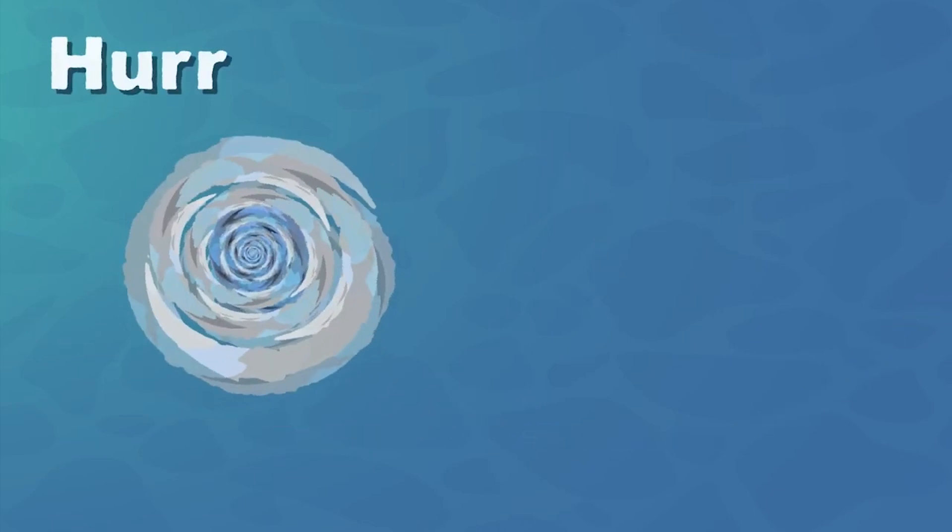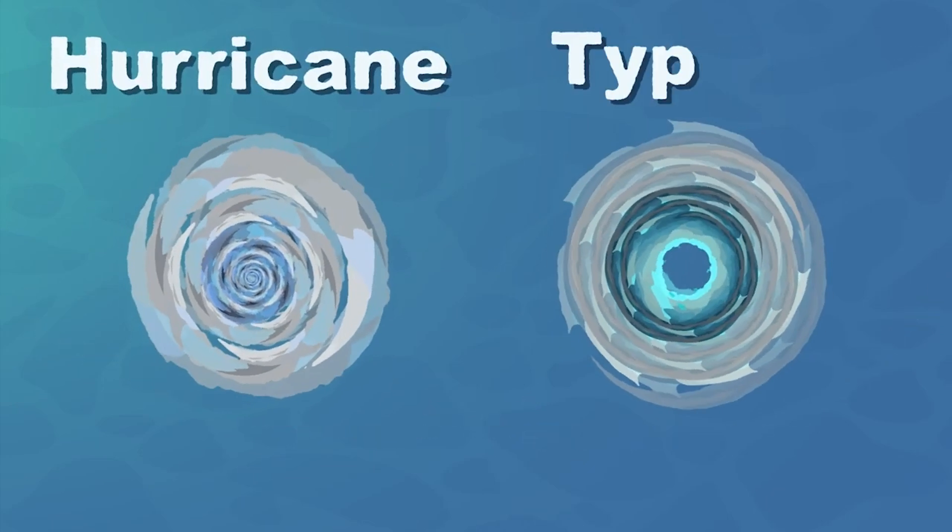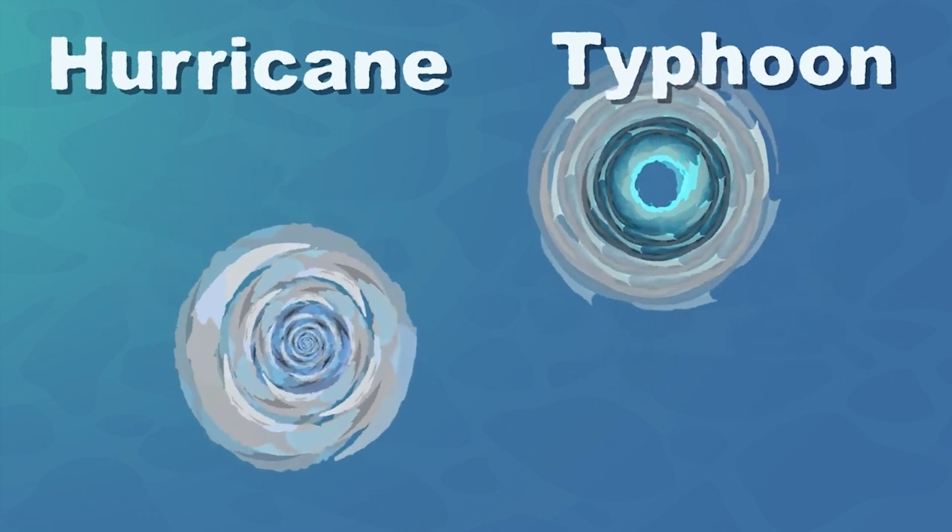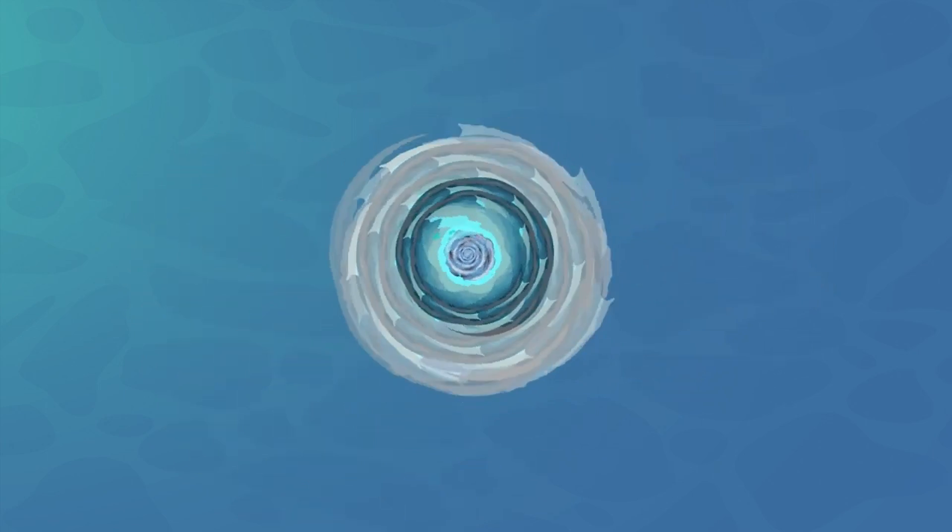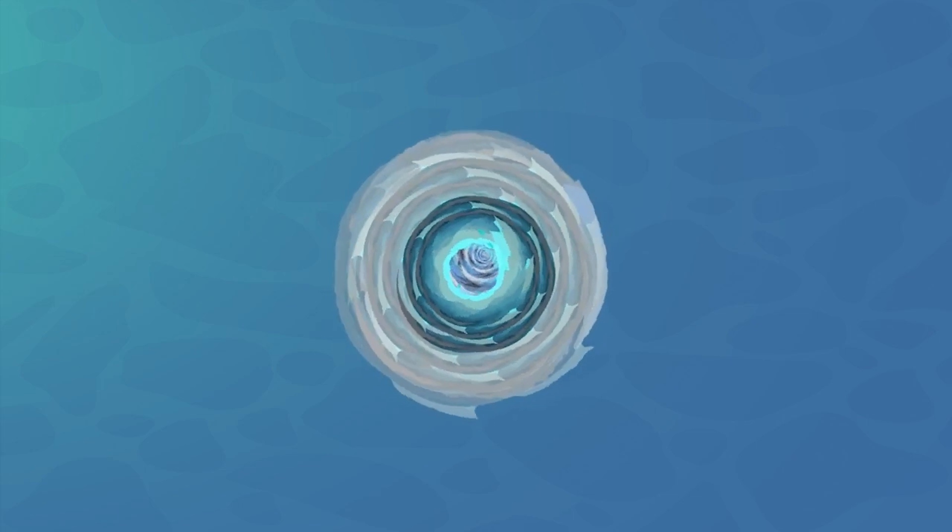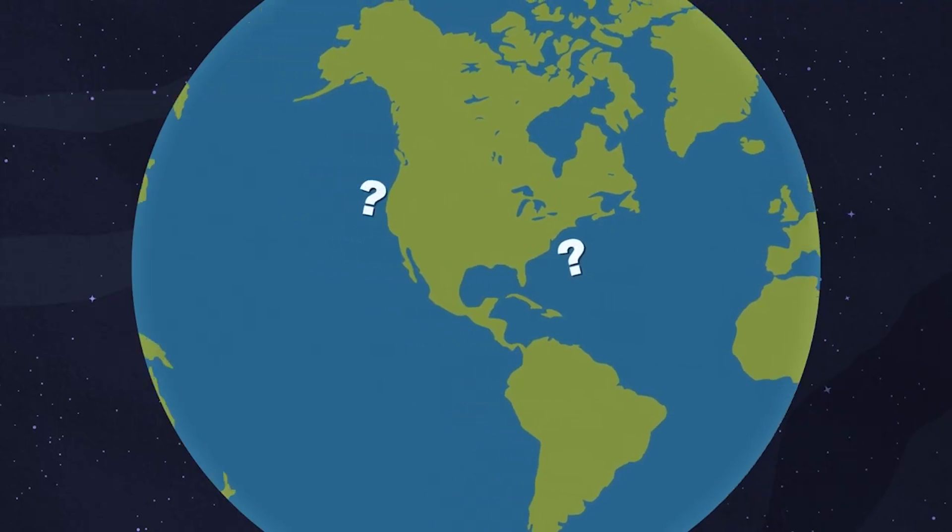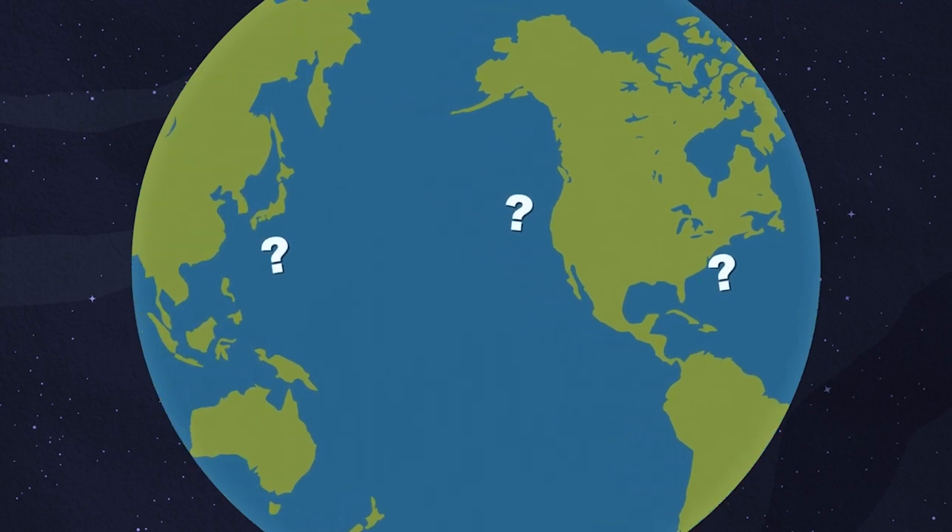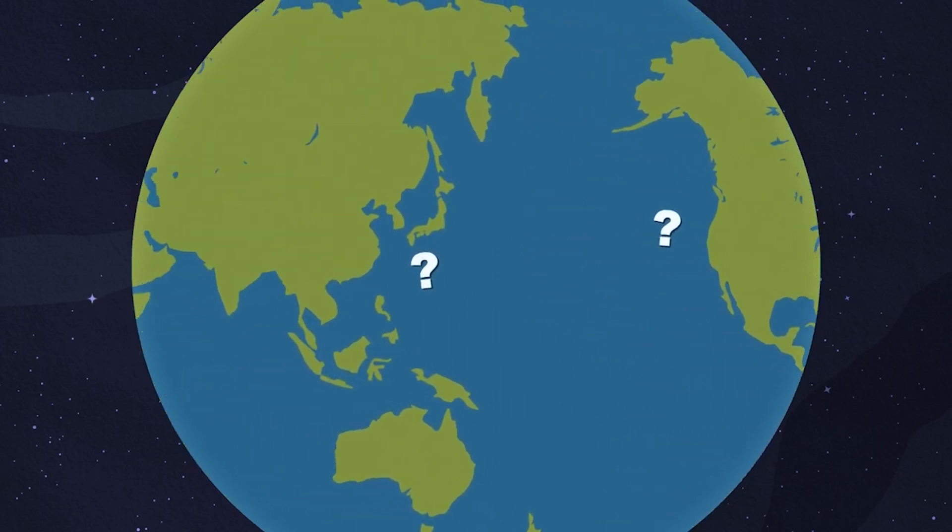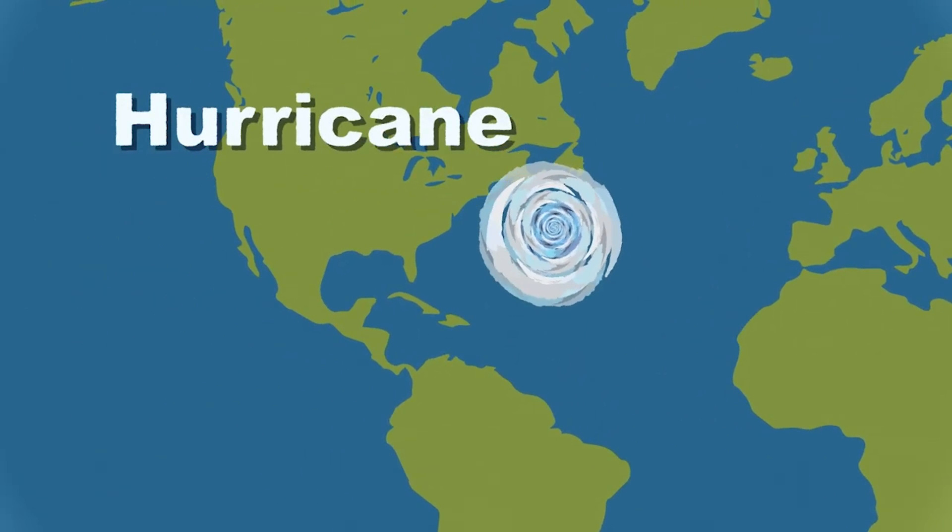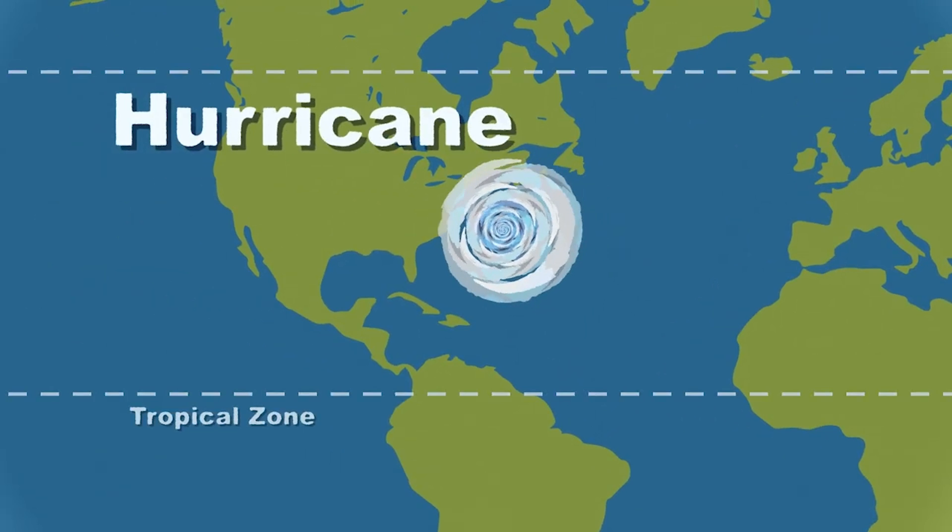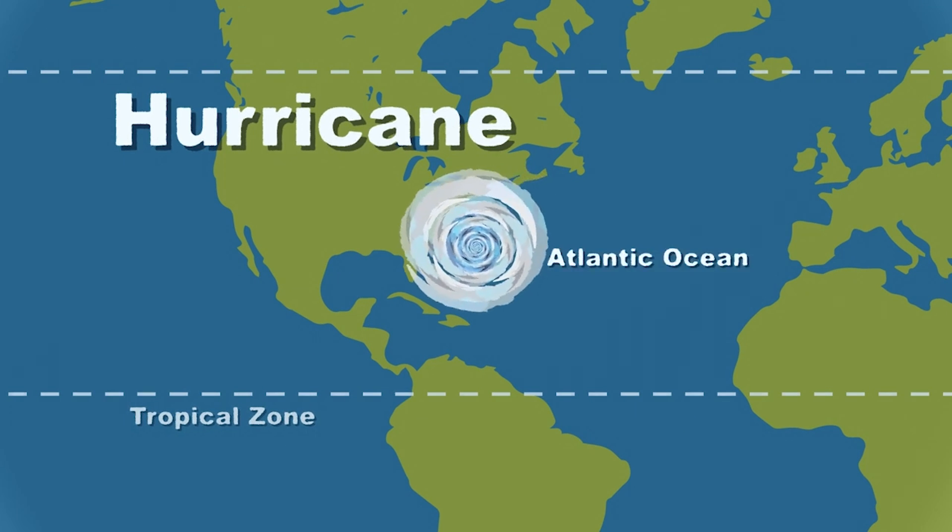This is a hurricane and here's a typhoon. Both produce strong winds. What's the difference between the two? When hurricanes and typhoons form, they are essentially the same type of storm. The difference is their geographical locations.